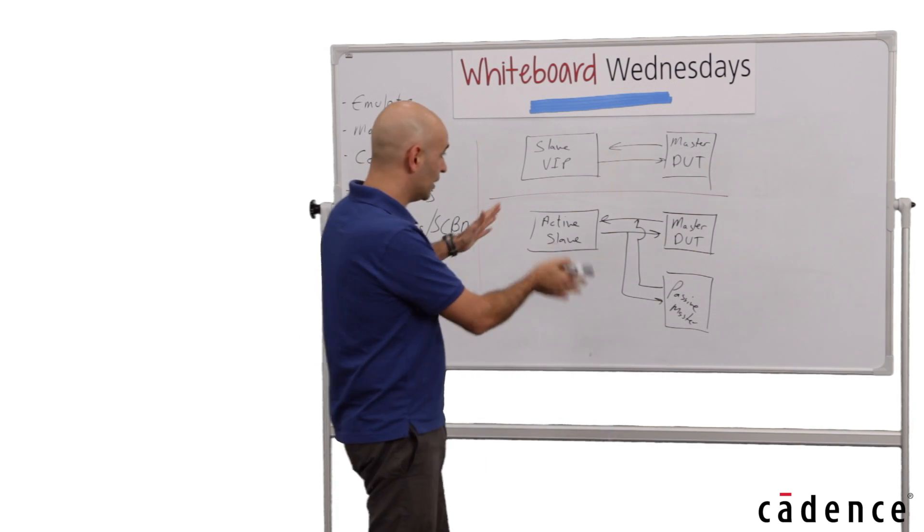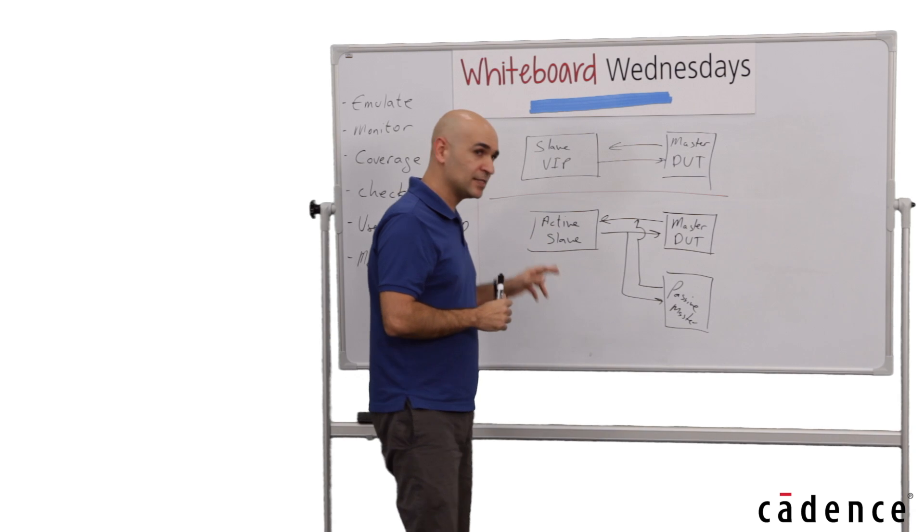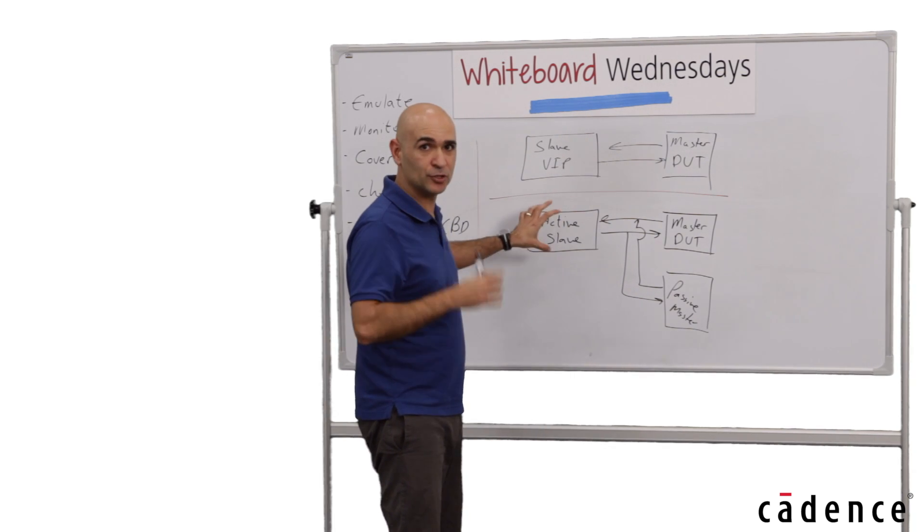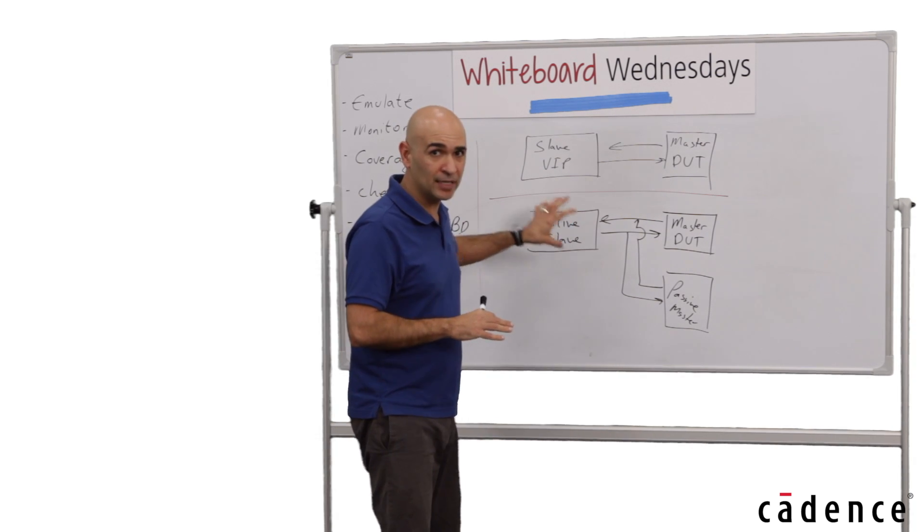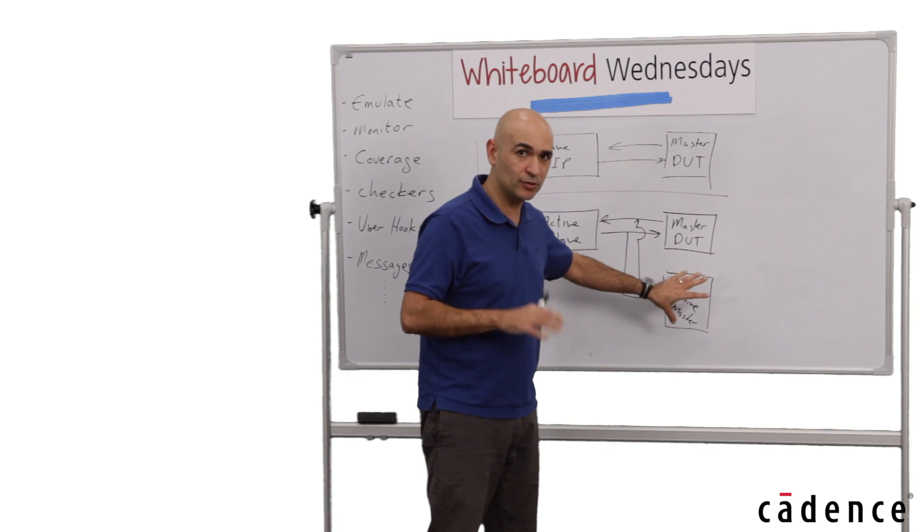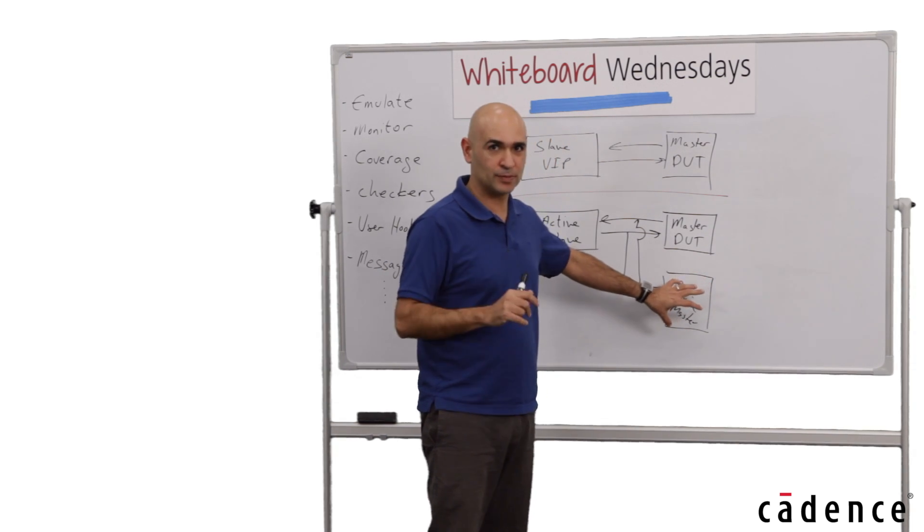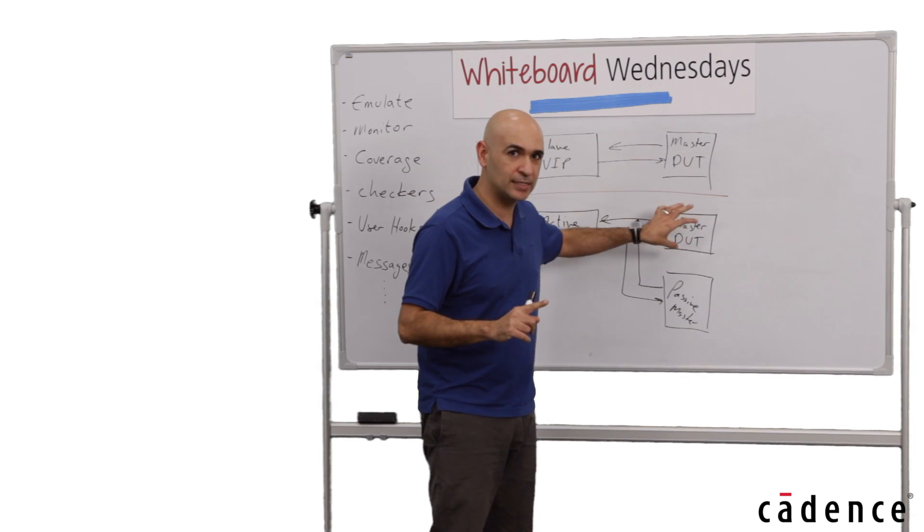Another difference between these two entities is the internal state machine implementation. The active slave implementation of the state machine is straightforward, just implementing the state machine according to the protocol specification, and the state machine can behave independently. The passive agent state machine, on the other hand, cannot just change according to the protocol specification, because it also needs to follow the master DUT state machine.